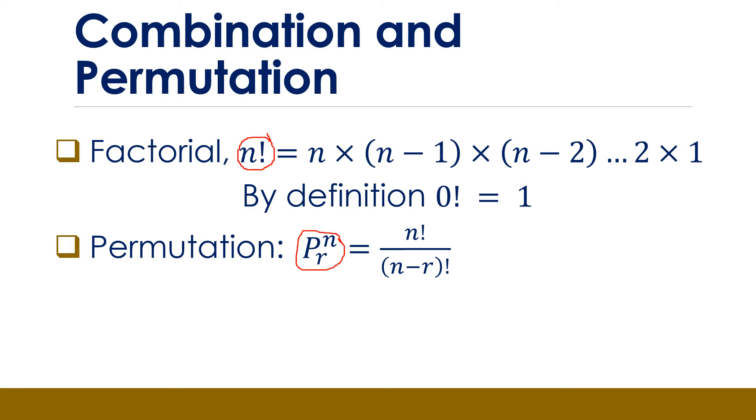The number of ways of arranging R distinct objects with no repetition drawn from a set of N distinct objects is given by N permutation R. Now, you have to be careful with the denominator there. N minus R factorial is actually not equal to N factorial minus R factorial, which means that the factorial operator is not distributive.